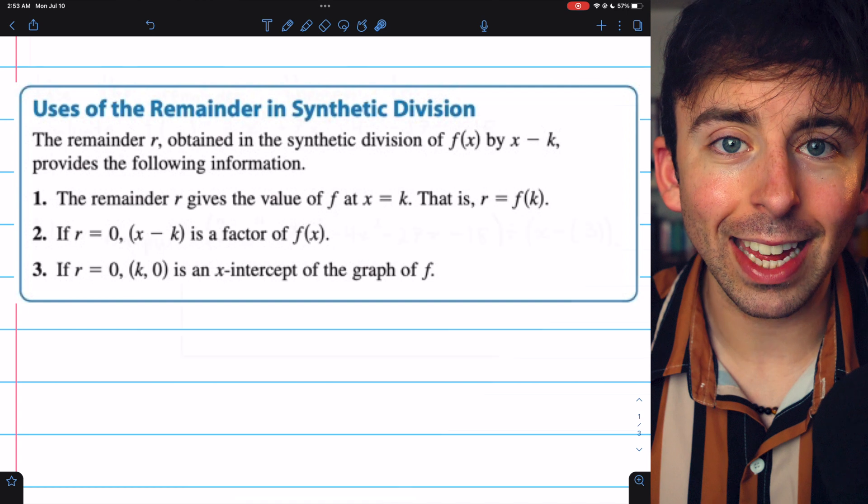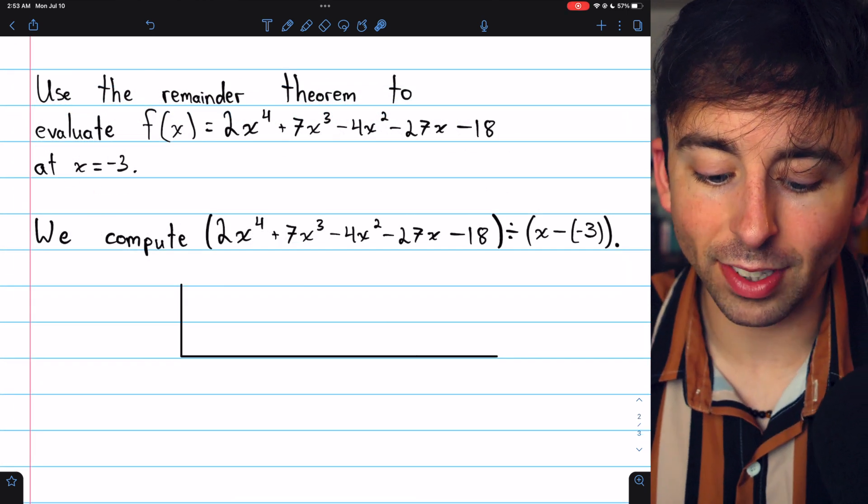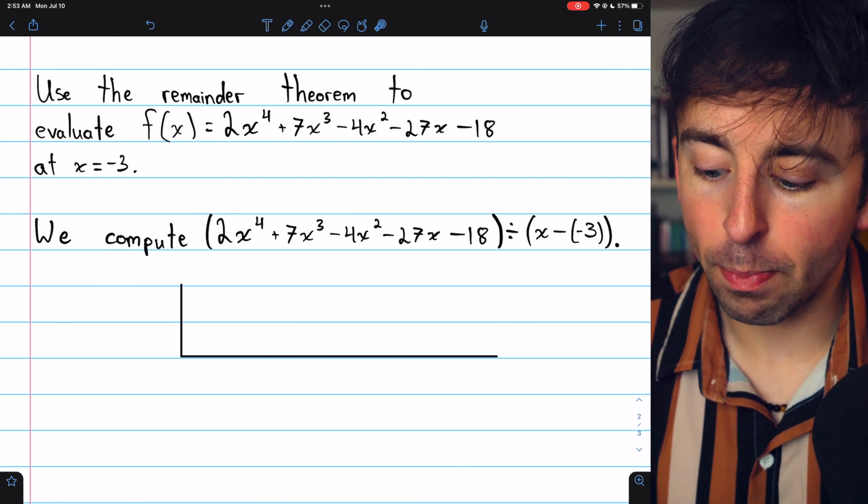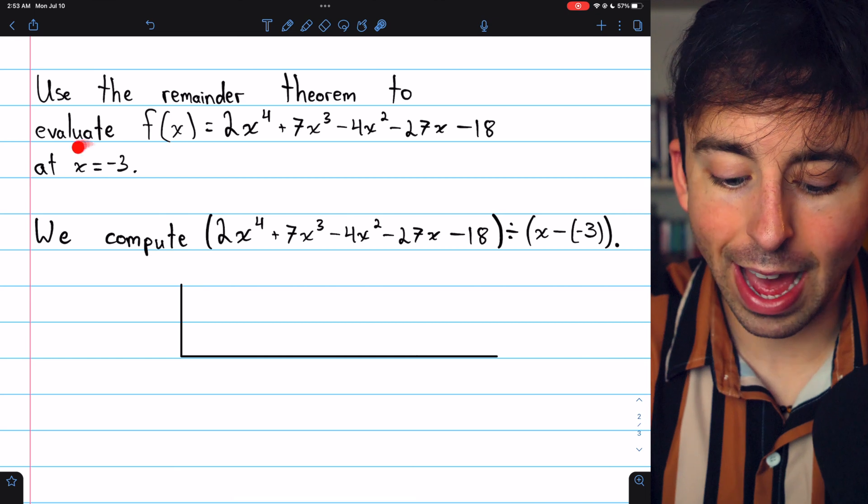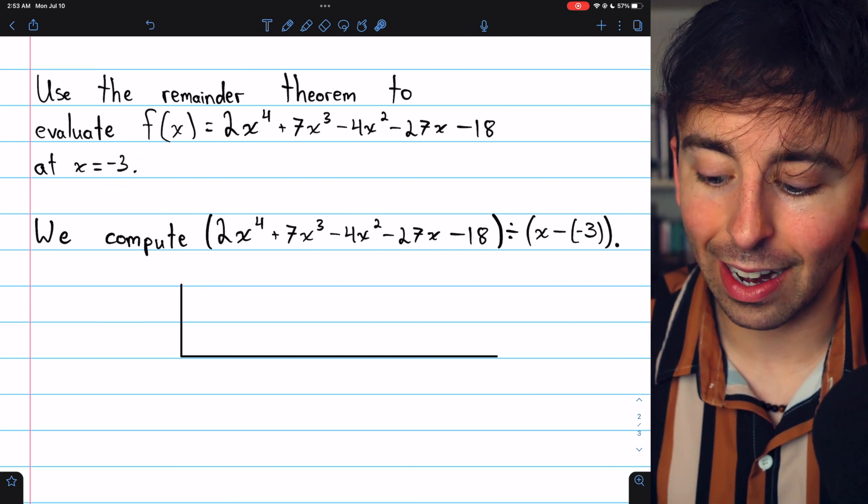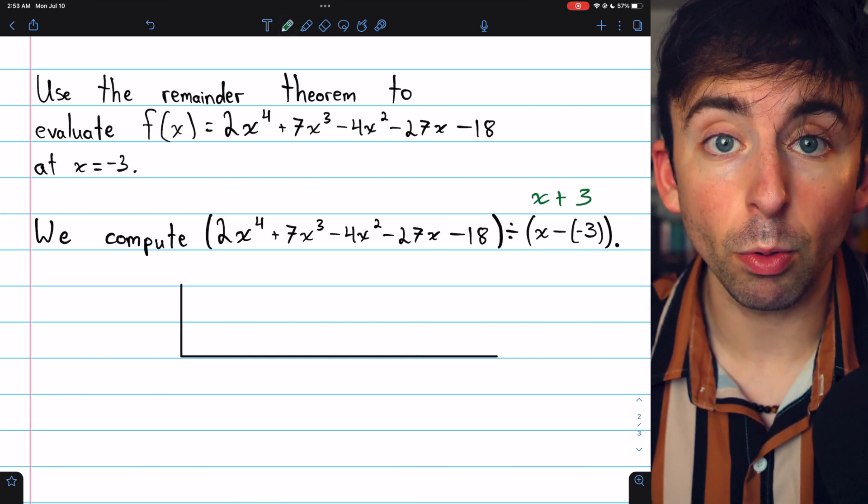Let's see an example like that. So we'll use the remainder theorem to evaluate this function at x equals negative 3. Thus, we'll need to divide the polynomial by x minus that x value. That x value is negative 3. So it's x minus negative 3, which is, of course, the same as x plus 3.